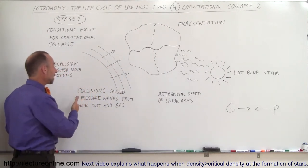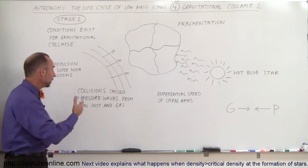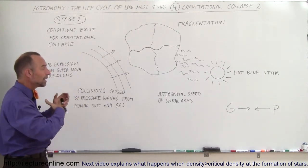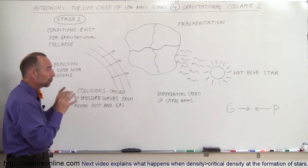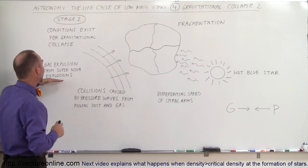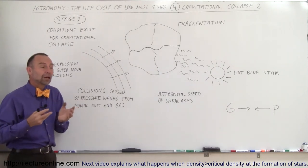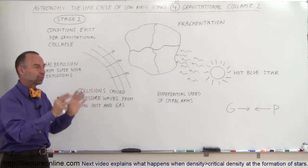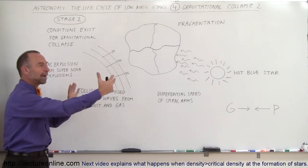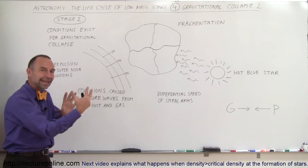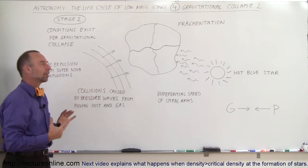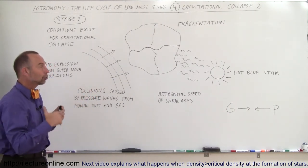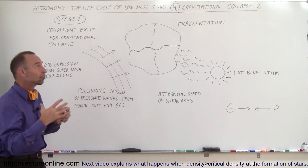In some cases we have collisions caused by pressure waves from moving dust and gas. For example, gas expulsion from a supernova could take a bunch of dust and gas and push it forward at very high speeds, colliding with another mass of dust and gas, again condensing or making the density of that dust and gas much higher to the point where gravitational collapse could begin.